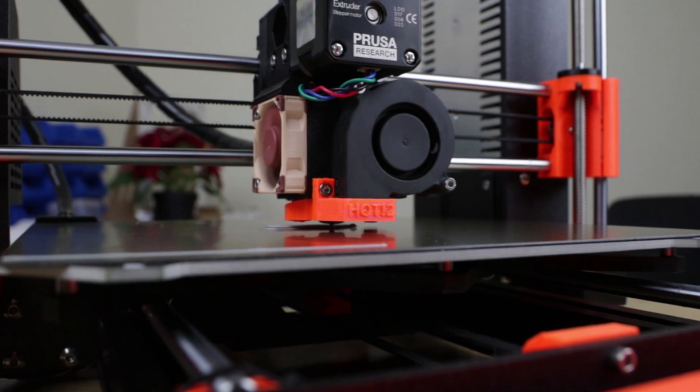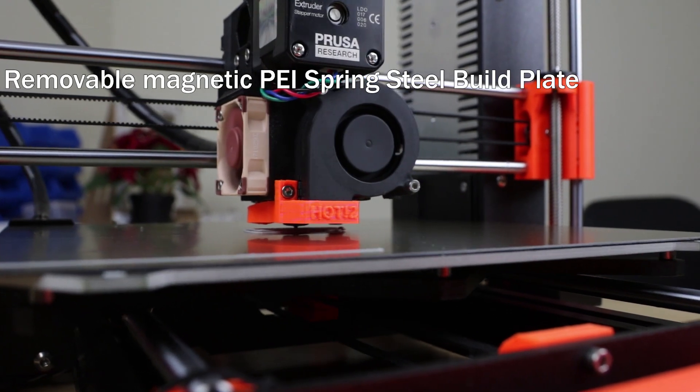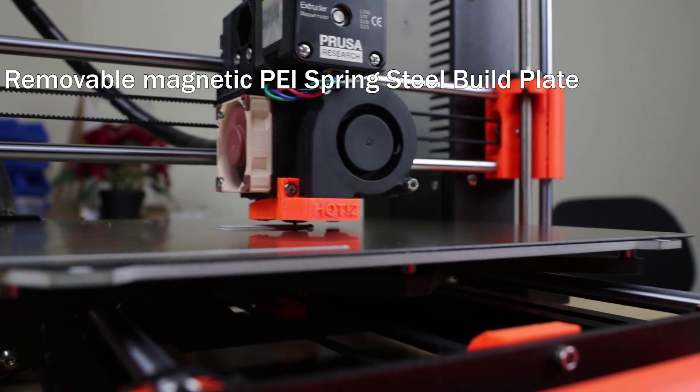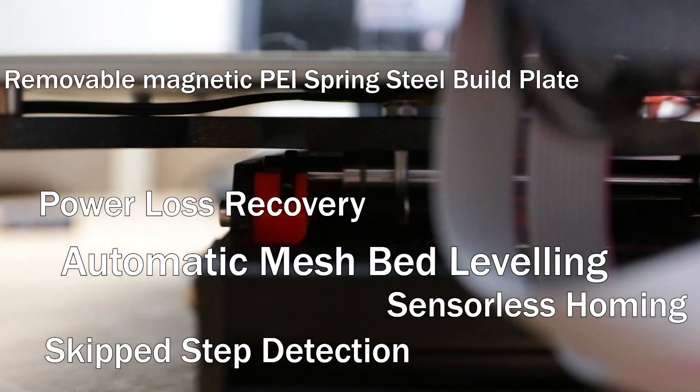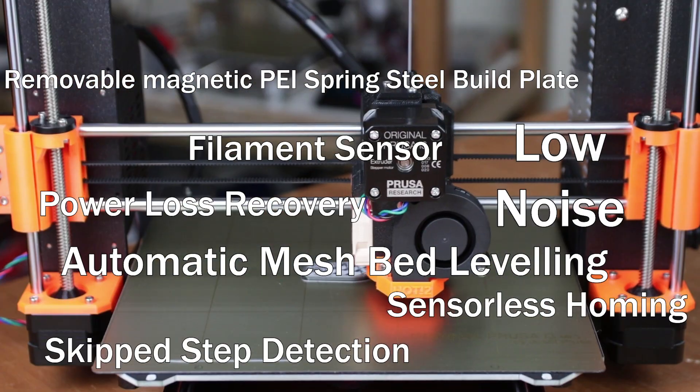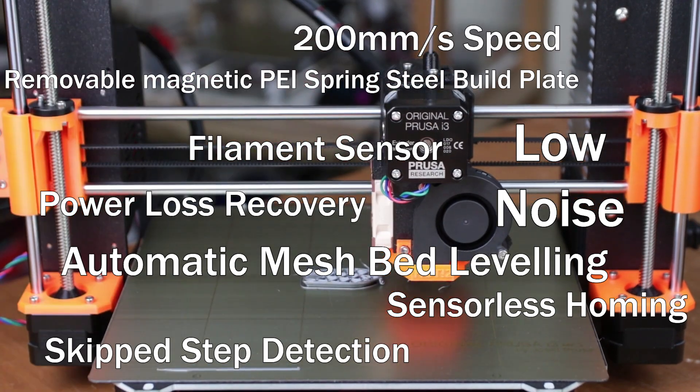The extensive list of other features includes a removable magnetic PEI spring steel build plate, automatic mesh bed leveling, power loss recovery, skip step detection, filament sensor, low overall printer noise, and up to 200mm a second print speed.